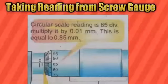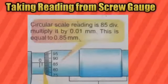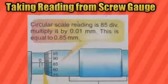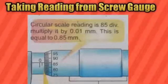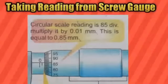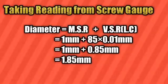In this picture, you can see that the 85th division of the circular scale is exactly coinciding with the index line. We will multiply 85 by the least count of the screw gauge, which is 0.01 mm. The answer will be 0.85 mm.